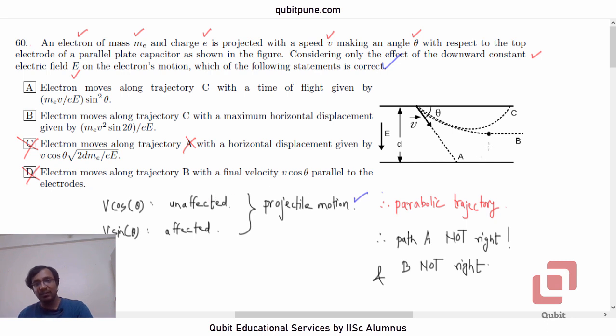Why will it not come out with a final velocity of V cos theta? Because the extent of the plates goes beyond this. E bar still exists here in that blue region, which means electron is still going to experience electric field's opposing force. So, it then boils down to options A or B. Electron moves along trajectory C. That is a common pattern. With the time of flight given by E E sine square theta. And for option B, we have electron moves along trajectory with a maximum horizontal displacement.